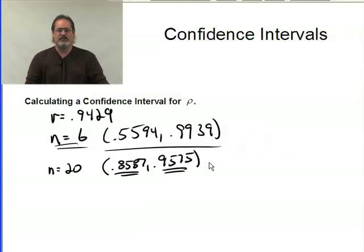It's the same idea that we saw when we were doing confidence interval for the mean, or for the proportion, or anything else. The larger the sample size, holding everything else constant, the smaller the interval is going to be, the better the estimate is going to be.